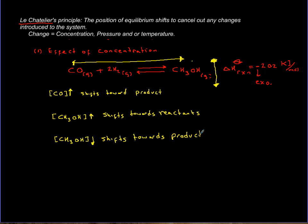One thing you should accept is that once you play with concentration, there is no effect on the value of K-equilibrium. K-equilibrium, or K-concentration, does not change when concentration changes. You only change the position of equilibrium — you either go further to the right or left. Once you are there, you create a new proportionality or ratio. K stays as is; it doesn't change.